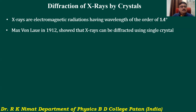The scientist Max von Laue, a German physicist, in 1912 showed that X-rays can be diffracted using a single crystal. We know that ordinary light can be diffracted using a plane diffraction grating. However, since the wavelength of X-rays is very small — of the order of one angstrom unit — a plane diffraction grating cannot be used to study the diffraction of X-rays.